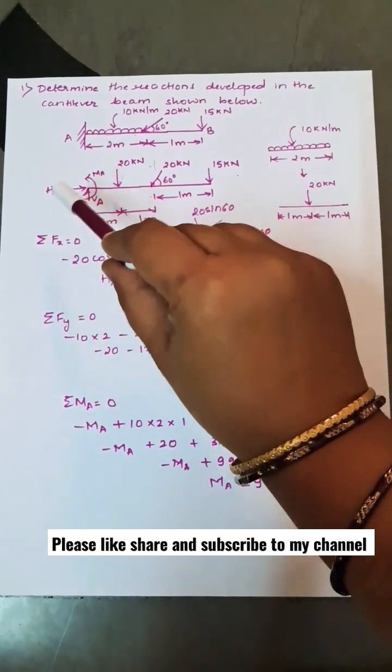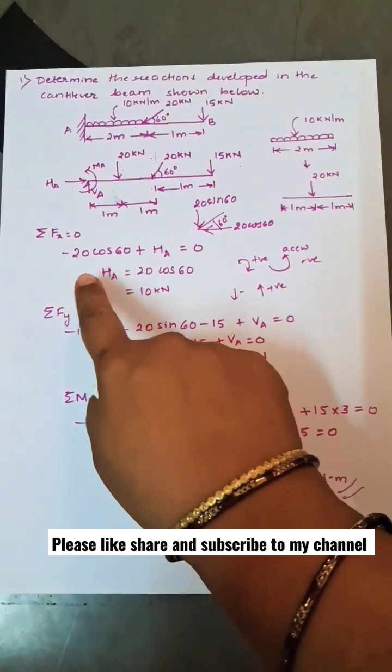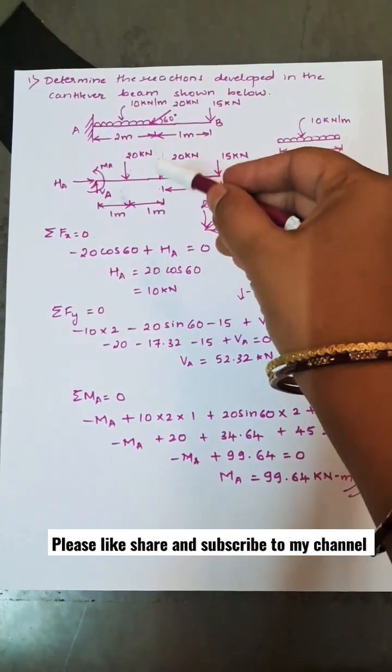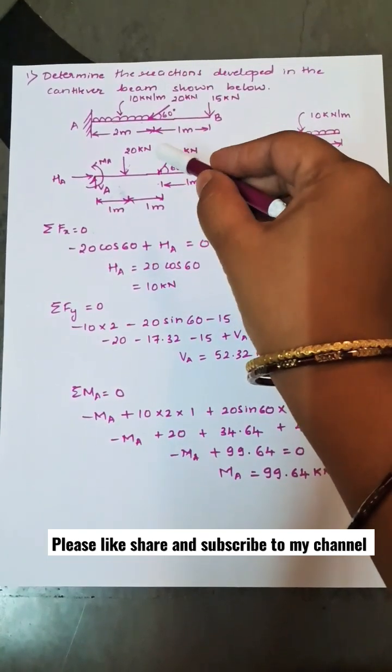At the support there will be three reactions: vertical, horizontal, and there will be a moment. Taking summation of horizontal forces, here it is an inclined force. When we resolve that one, 20 cos 60 is horizontal and 20 sin 60 is vertical.